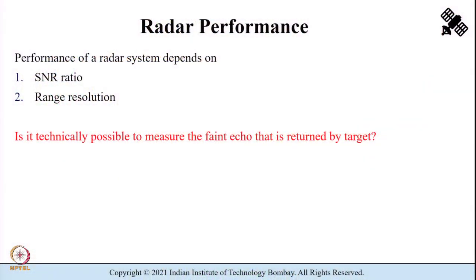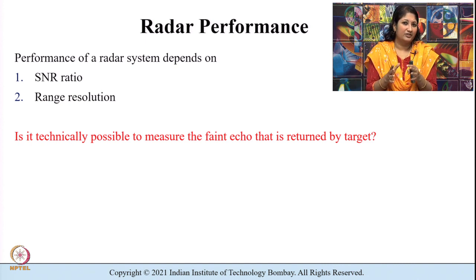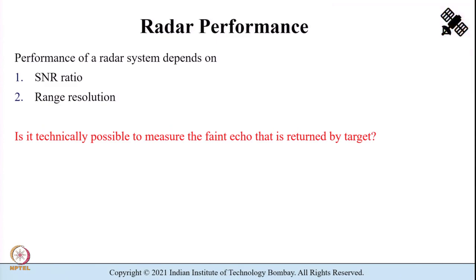Radar performance is usually defined by something known as signal-to-noise ratio (SNR) and range resolution. Here, signal-to-noise ratio refers to the strength of the signal with respect to that of the noise. Remember the example from an earlier lecture — imagine you are at a crowded traffic junction trying to listen to your favorite song being played nearby. The traffic junction offers a lot of background noise, whereas you strain your ears in a particular direction to listen to the song.